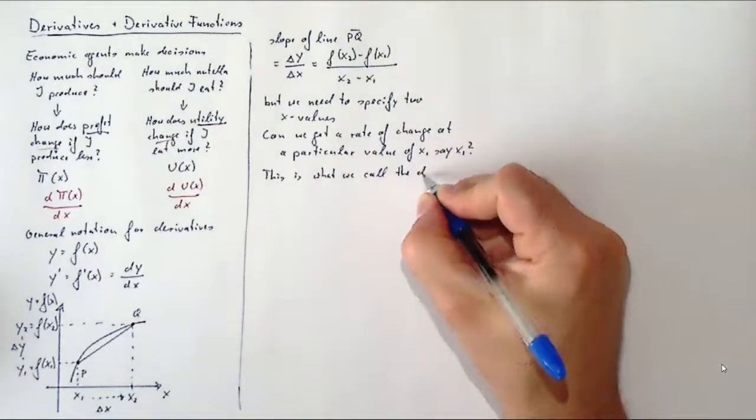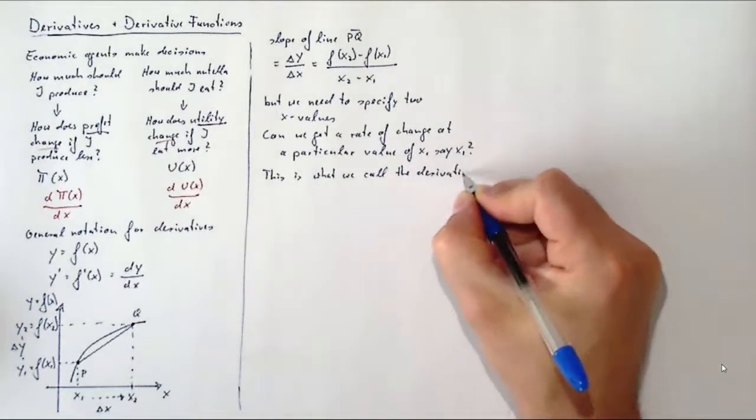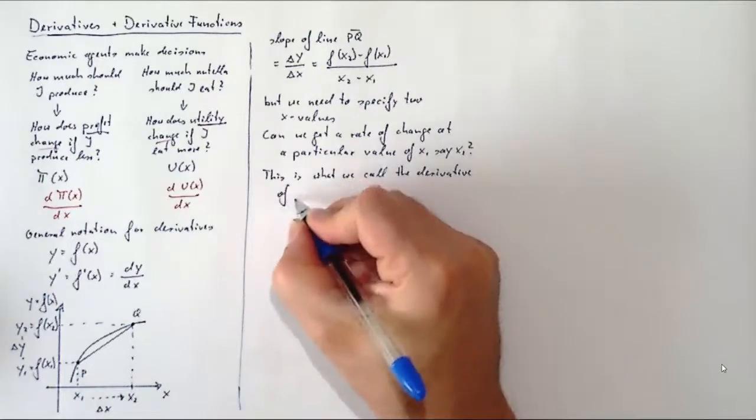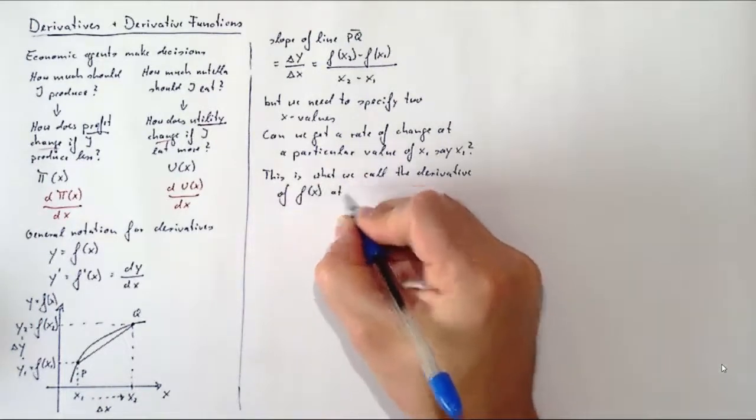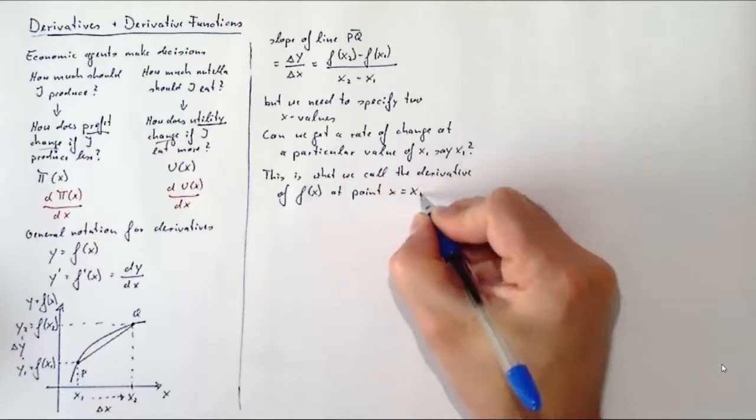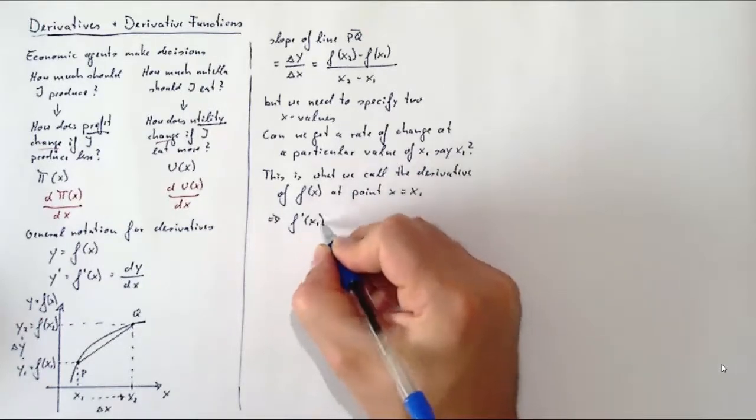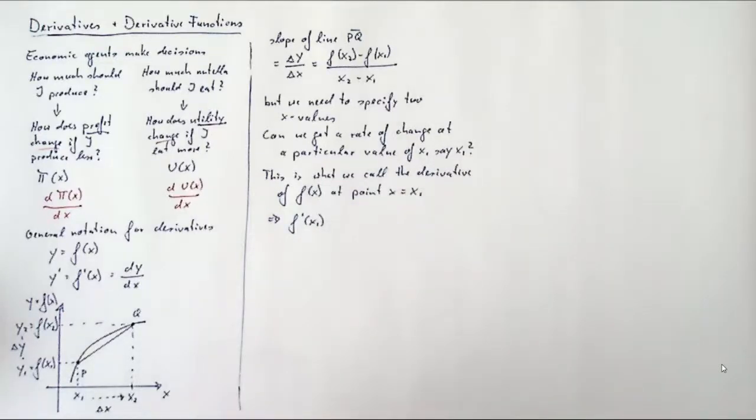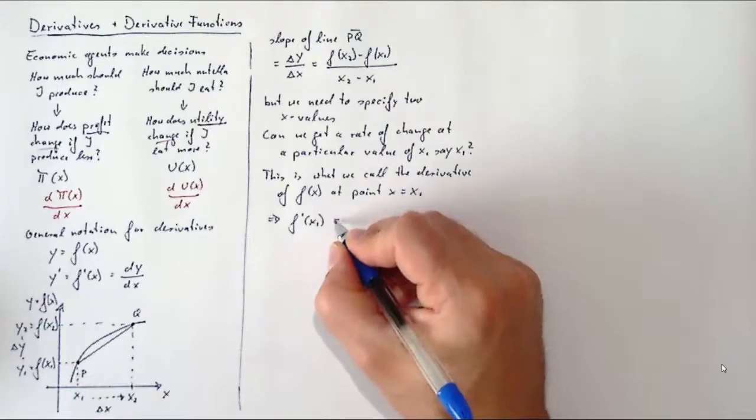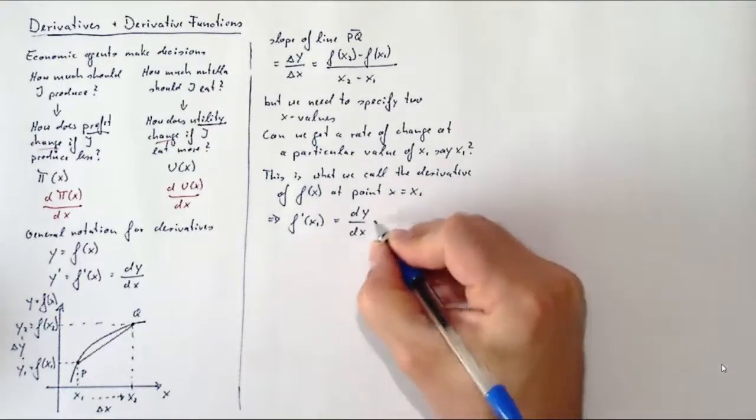This rate of change at a particular point is what we call a derivative at a particular point x = x₁, for instance. And we label that f'(x) or also dy/dx evaluated at the point x₁.